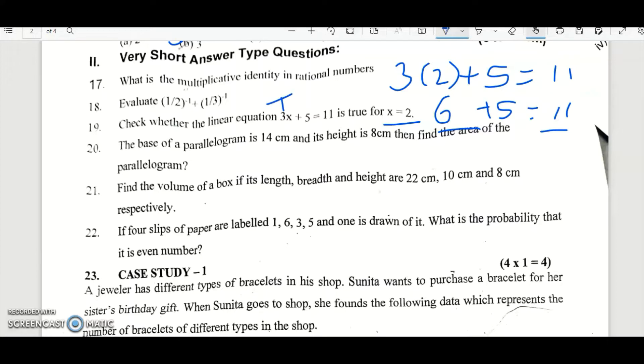The base of the parallelogram is 14 centimeters. Find the area of the parallelogram. Formula for area of parallelogram is BH. Area equal to BH. What is base into height? Base is 14, height is 8. So 14 into 8 equal to square centimeters. Answer is 112 square centimeters.